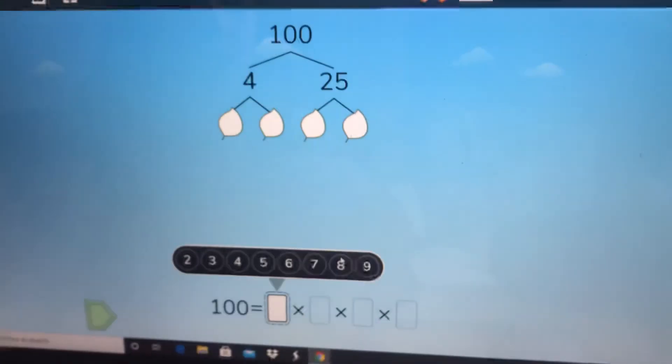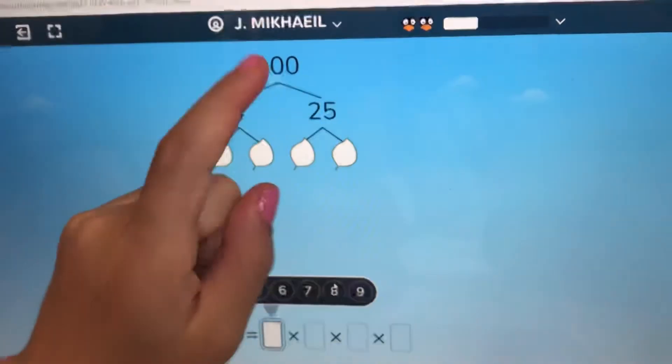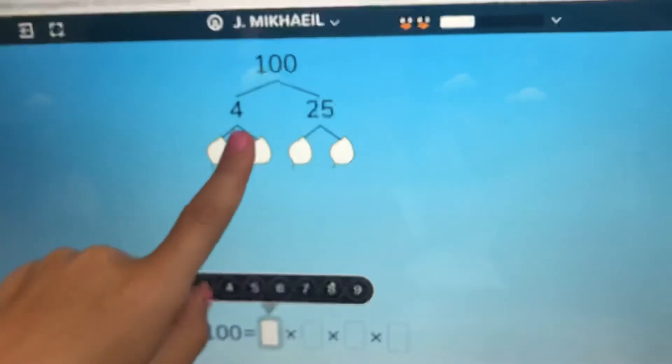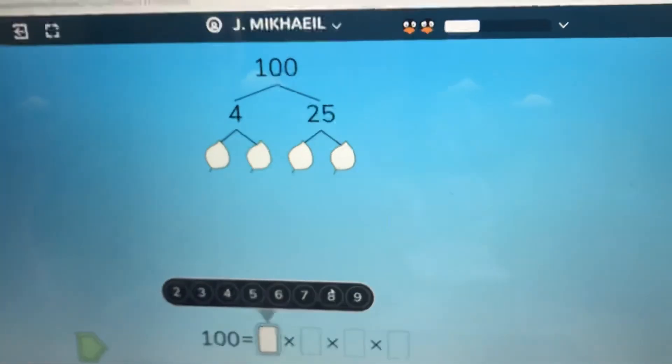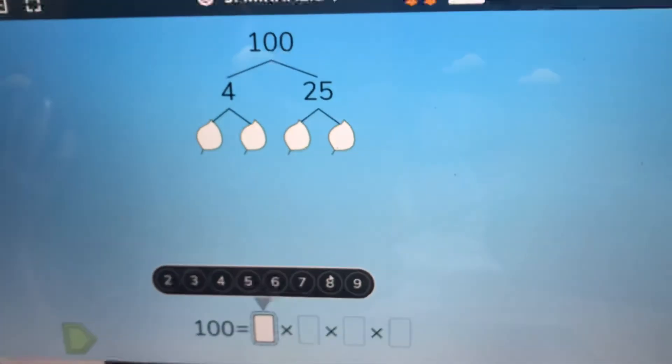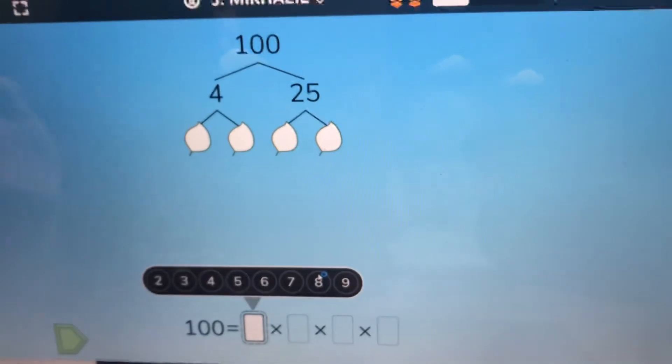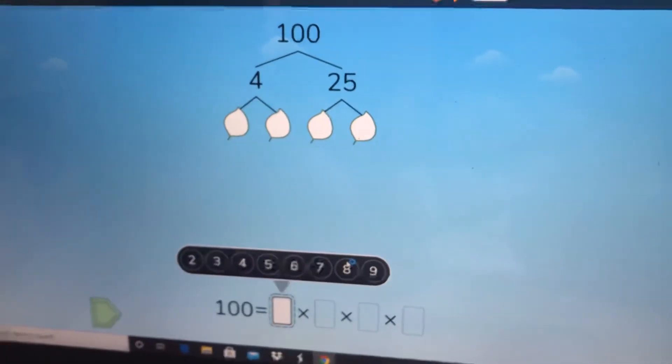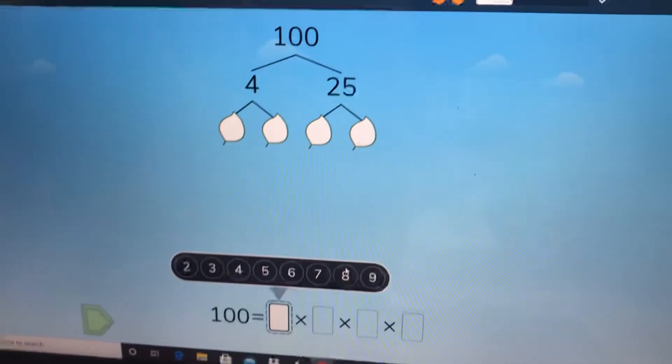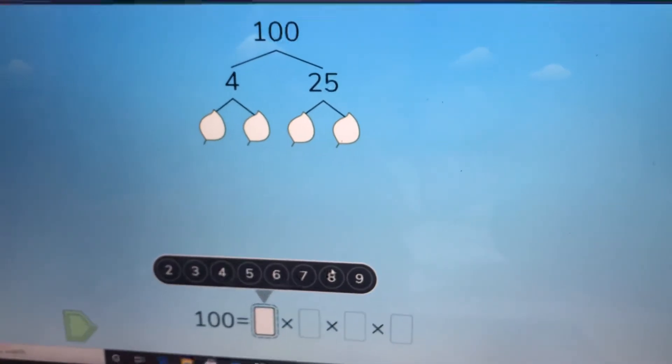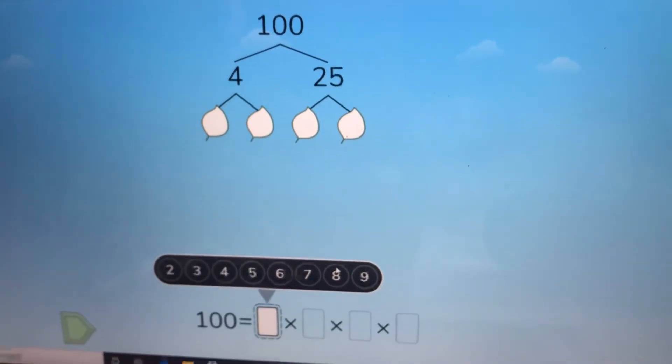So basically, you have to look at this number and say to yourself what times what equals four. I'll give you guys some thinking time. I'll give you five seconds. Five, four, three, two, one.